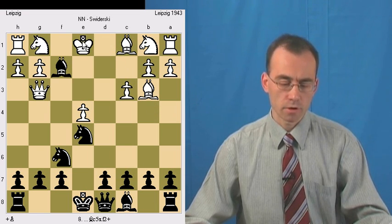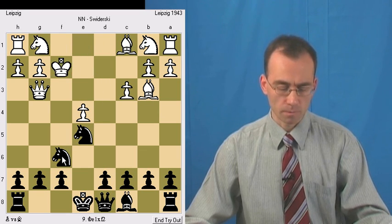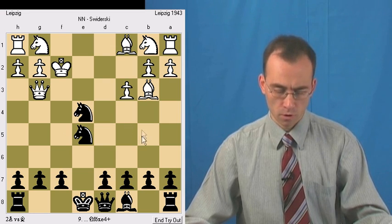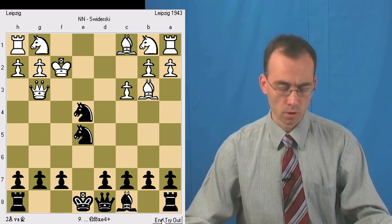Now White's king can just take the bishop. But then Ne4 fork. So winning a queen. So it's not good either.